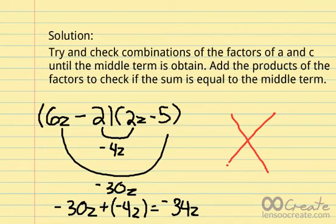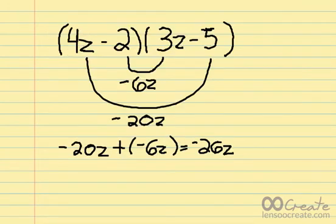No worries! Keep on trying! Let's try again! The product of 4z minus 2 and 3z minus 5. Their product is negative 26z. Therefore, this is the correct factor.